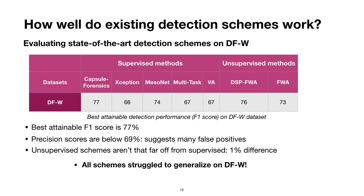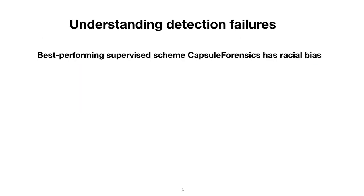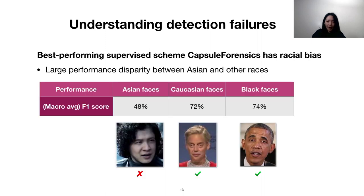Now, an important part is understanding why these methods failed to accurately detect these videos. In the paper, we do more detailed analysis, but one reason worth pointing out is the issue of racial bias impacting the best method, Capsule Forensics. We found that it was not as successful at catching Asian faces as compared to Caucasian and Black faces.